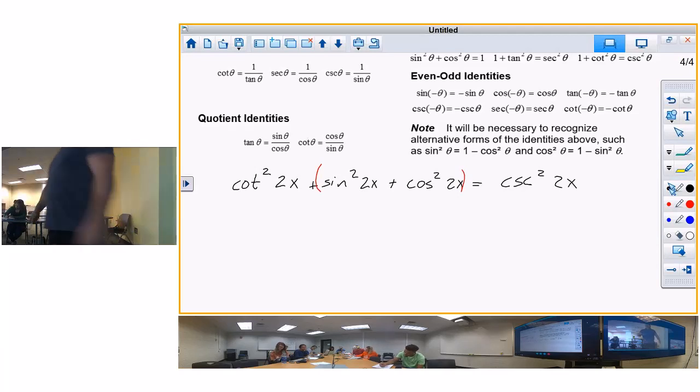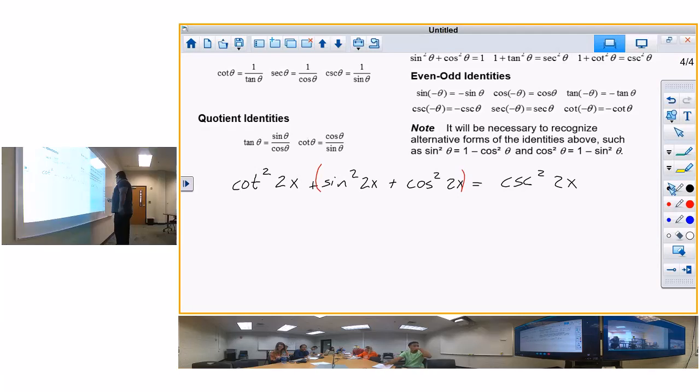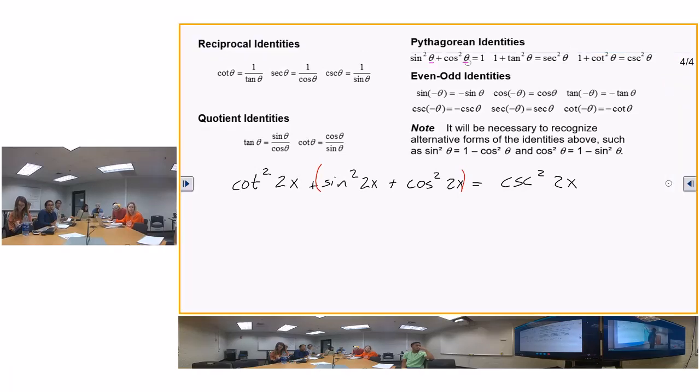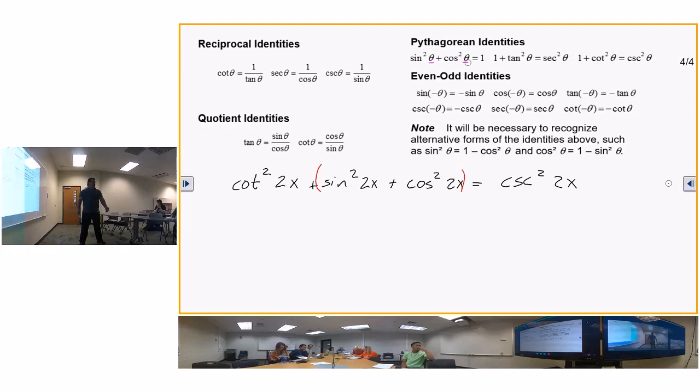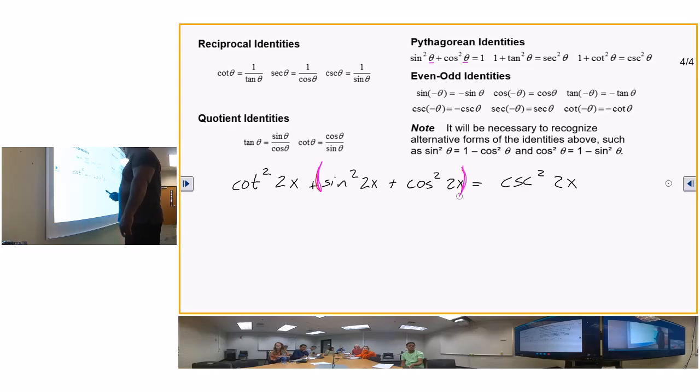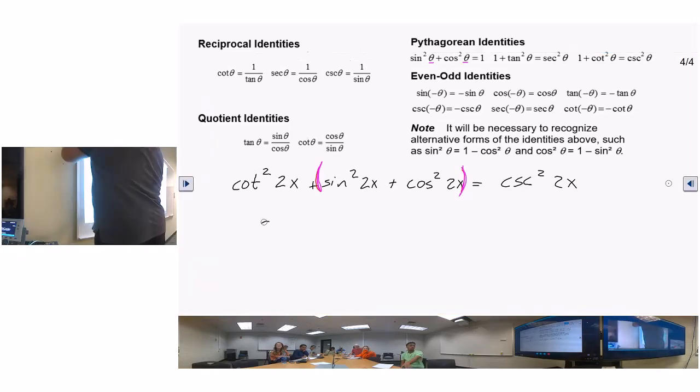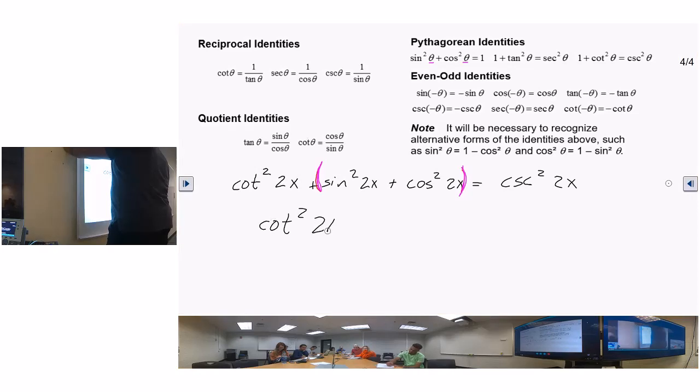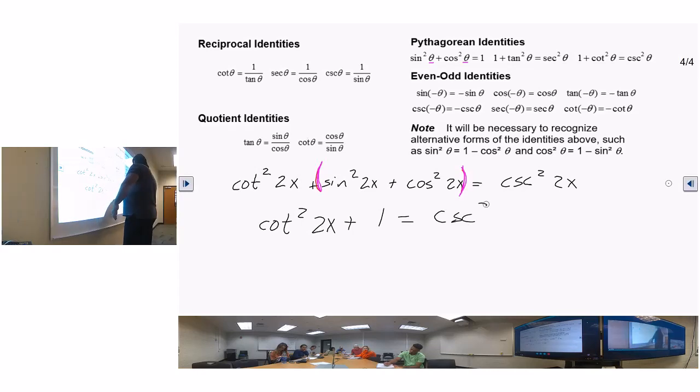What about the 2x? It doesn't matter. It could be 100. Sine squared of anything plus cosine squared of anything is what? One. Go to your identity up here. Does theta have a number in front of it? Theta is just theta. It doesn't matter what it is. Theta could be 36 degrees or it could be 107 degrees. What is the sine of 36 plus the cosine of 36 squared? One. So this is equal to one.